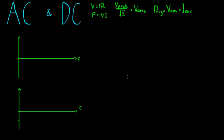G'day guys and welcome to our lesson on alternating current and direct current. The main difference between alternating current and direct current is that in alternating current you get both positive and negative voltages.